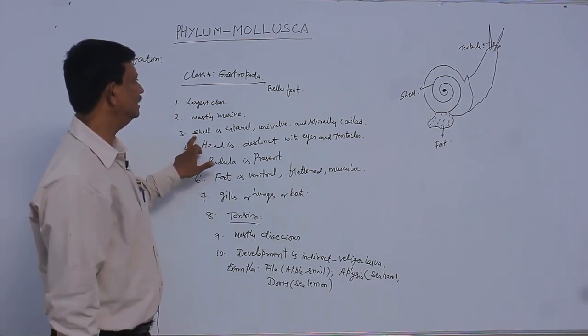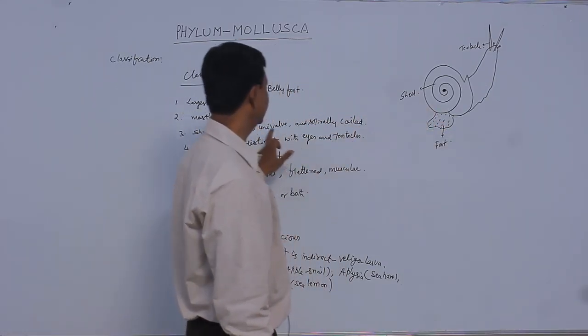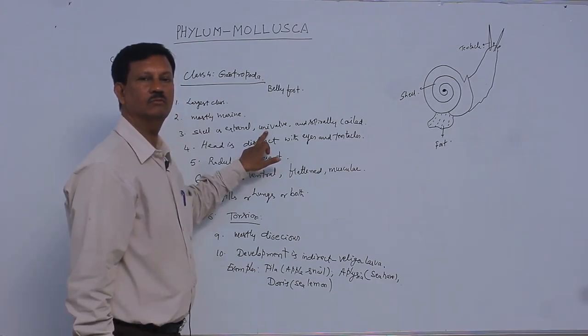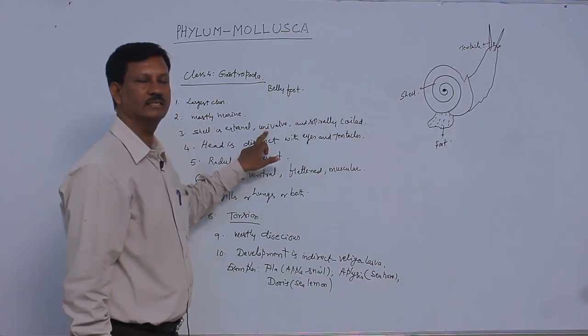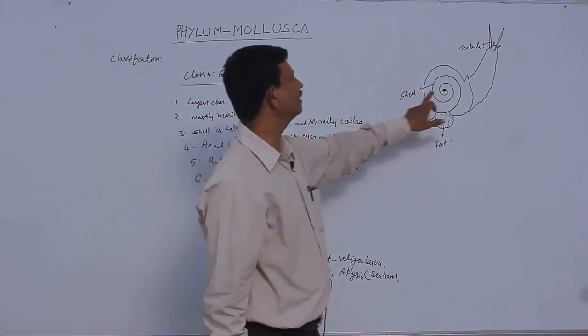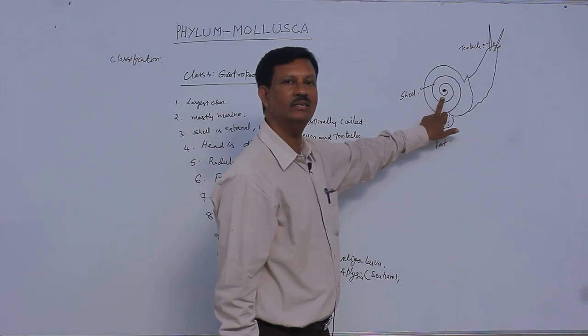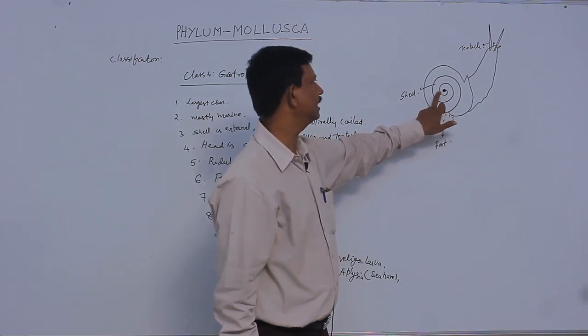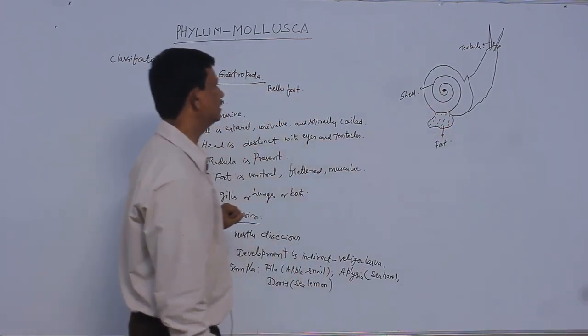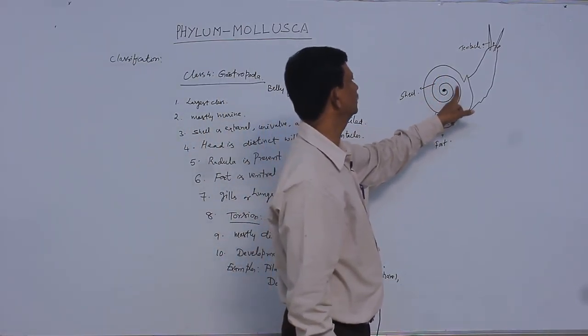The shell is external, present on the outer side of the body, and it is uniform. Only one shell is present, not divided into many plates. It is spirally coiled and asymmetrical.